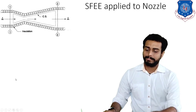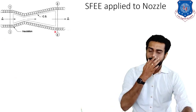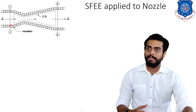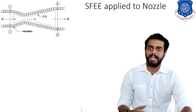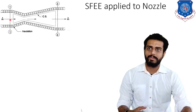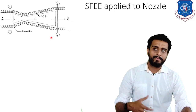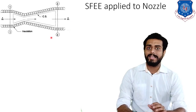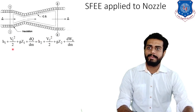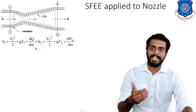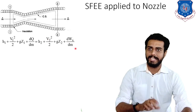As you can see, the nozzle is shown in the diagram. Point one represents the inlet section and point two represents the outlet section — it is a convergent-divergent nozzle. First, we write down the main SFEE equation: H1 + V1²/2 + gZ1 + dQ/dm = H2 + V2²/2 + gZ2 + dWx/dm.